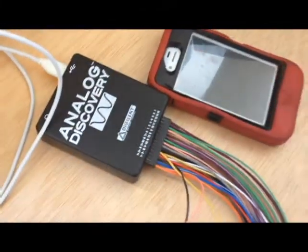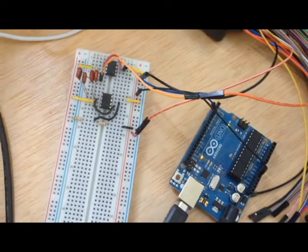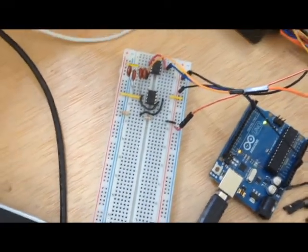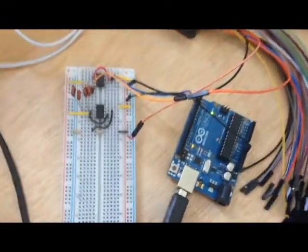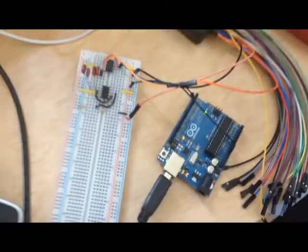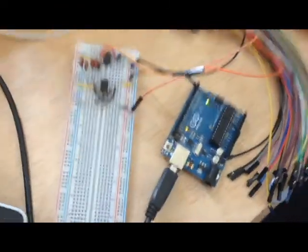And over here we've got our analog discovery hooked up. That is going to be taking our data, and we have it going to the waveform online interface. Okay, and now we're going to show you our data and talk to you a little bit about what's going on.